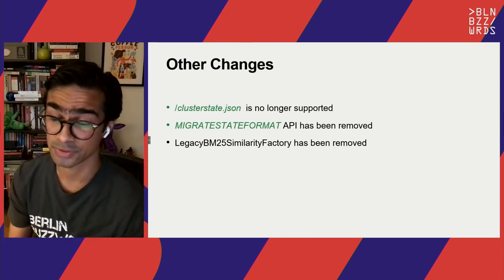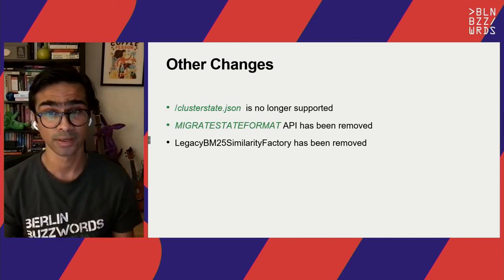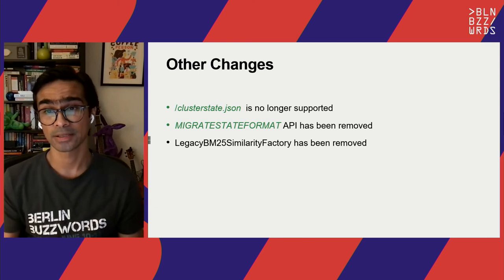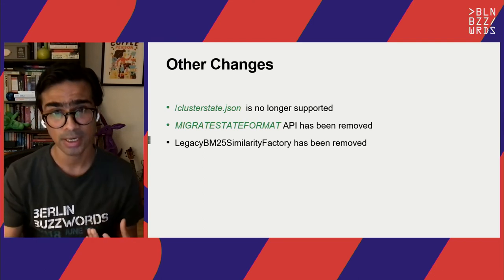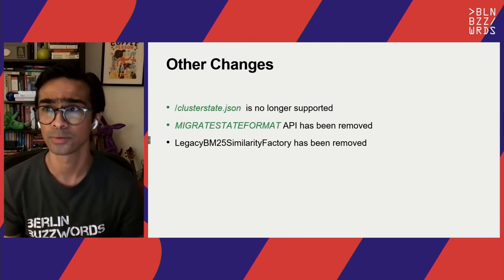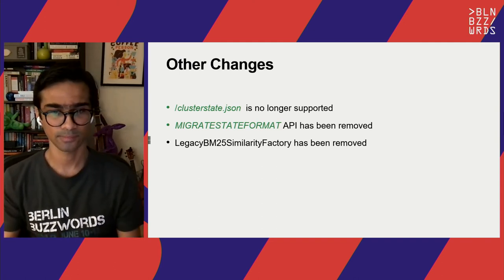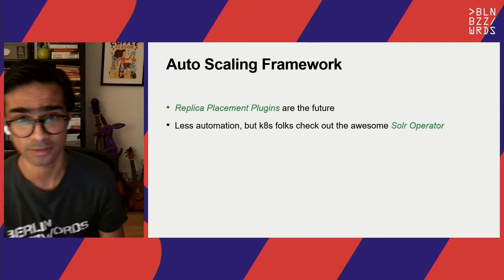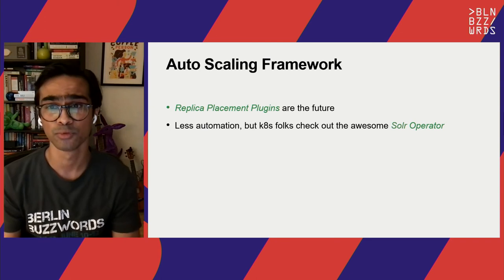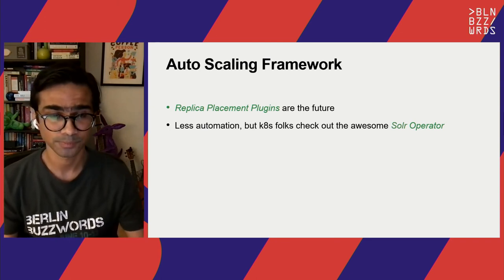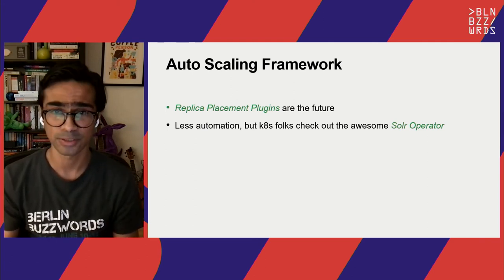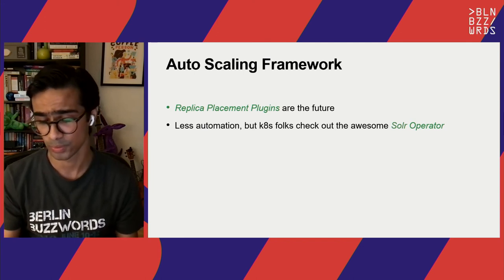Other removals include the old state format — changed along the 5x lines — which is no longer supported. The API that allowed migration from the old state to the new state format has also been removed. If you have collections created using old Solr versions, make sure you've migrated the state format. Get onto the 8x line, use the migrate state format API, then move on to Solr 9. Also, the legacy BM25 similarity factory has been removed — check the reference guide for your options.